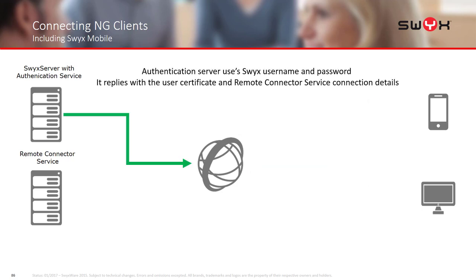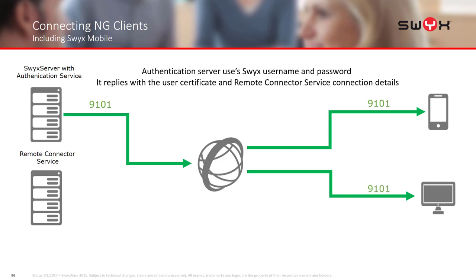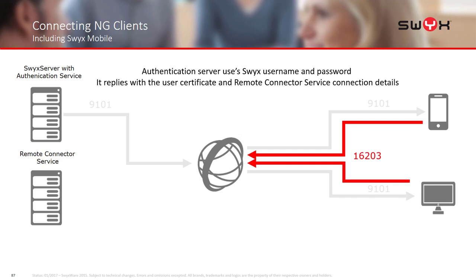In response, the SWIX server issues a certificate back to the next generation clients and also informs those clients of the location of the Remote Connector service — the IP address they need to connect to. The next generation clients will then use the first of the two ports, such as 16203, to form the TLS tunnel and open it through the Remote Connector. In your firewall you only need to open port 16203 and point it to the Remote Connector service, and the system is up and running. The certificate is issued by the authentication server so there's nothing to pre-install on the clients.